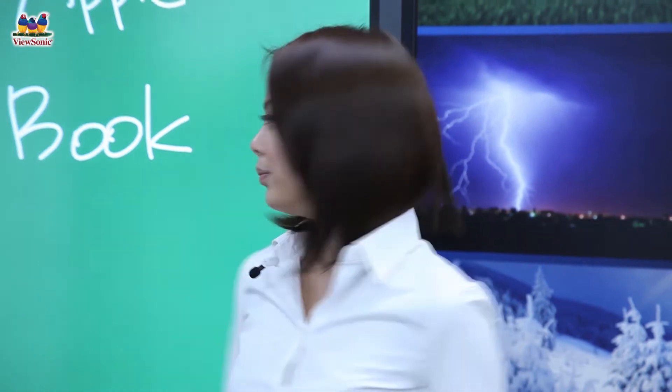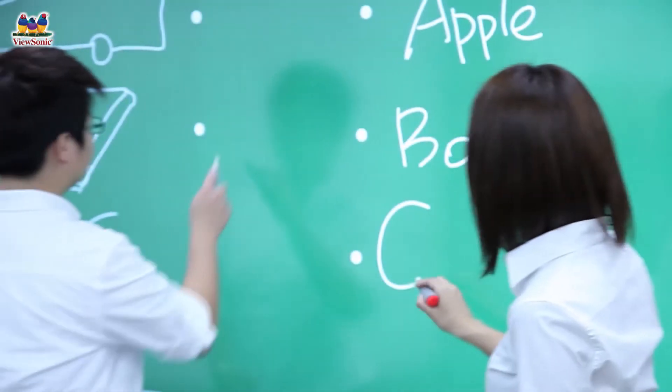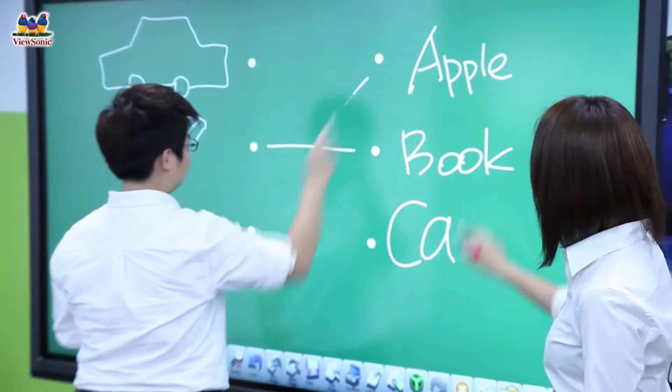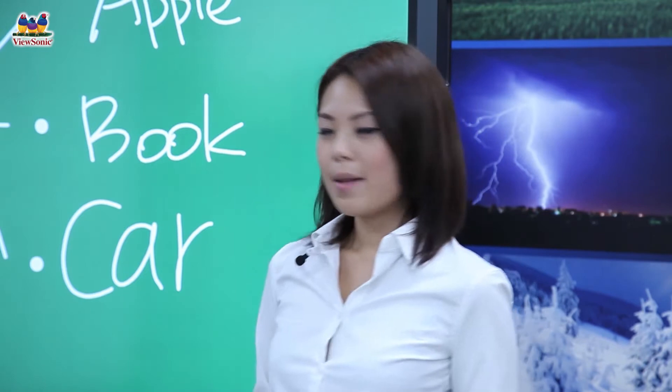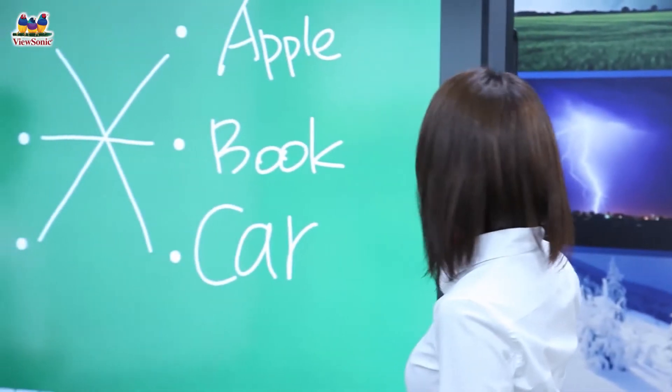Multiple touch capability lets two or more people work simultaneously on screen for better interactivity in the classrooms or boardrooms. This means that multiple users can create or collaborate using our intuitive and powerful ViewBoard software, as well as play games and music. For example, you can play the piano with your friends.